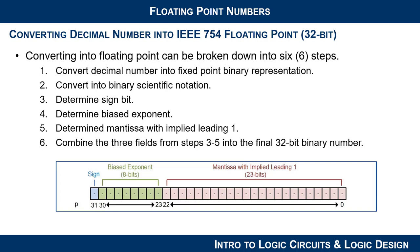If you remember, you can break down the conversion into six steps. First, take the decimal number and convert it into a fixed point binary representation — leave the radix point where it is, convert the whole number to binary, convert the fractional component to binary, and place them on either side of the radix point. Then convert to binary scientific notation by shifting the radix point until only one bit is to the left, and multiply the remaining mantissa by two raised to an exponent. Steps three, four, and five determine the sign bit, the biased exponent, and the mantissa with implied leading one. Those three fields are combined to form your final 32-bit floating point number.